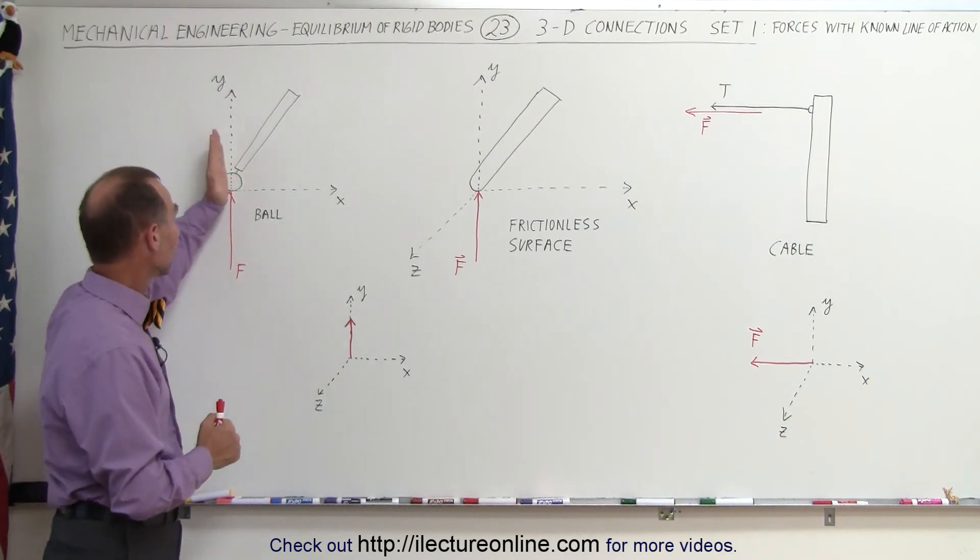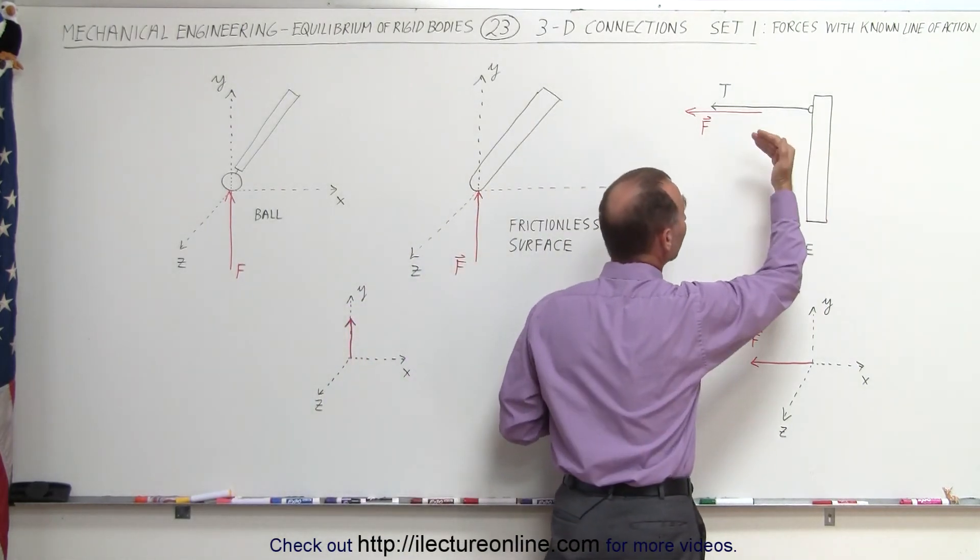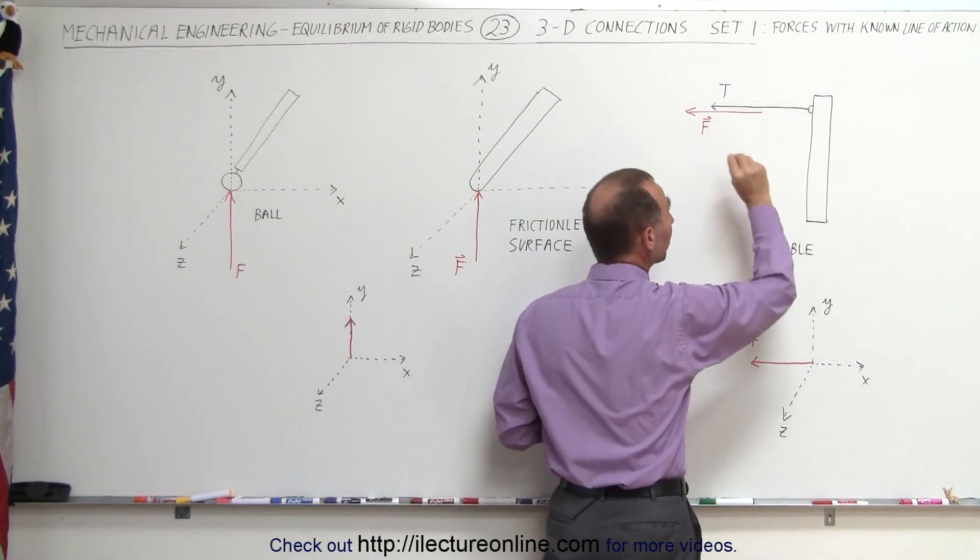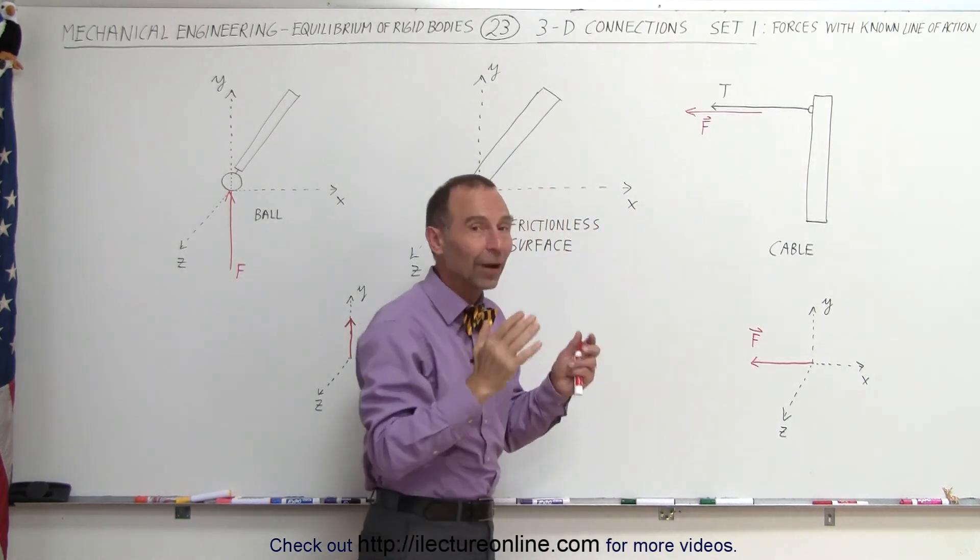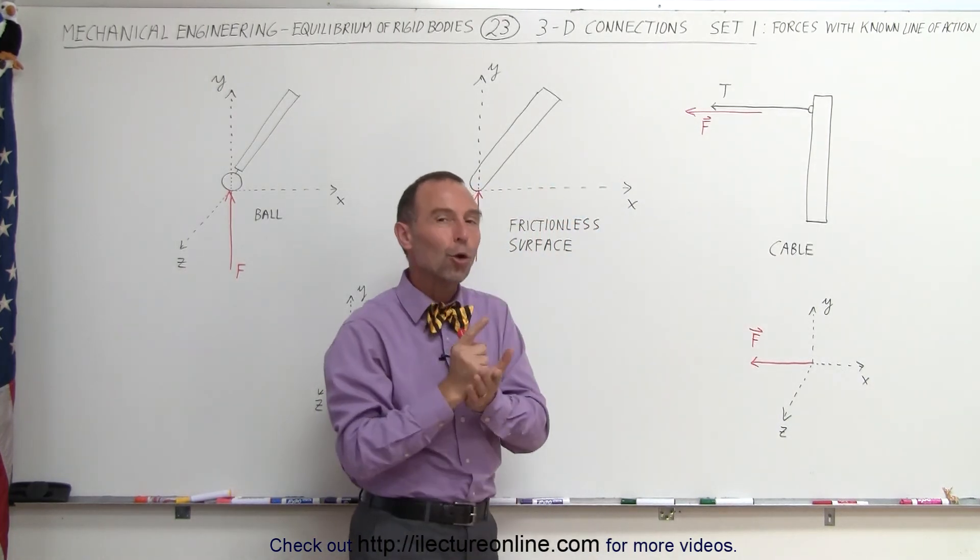So here it's directly upward from the floor, and here in this case it's directly away from the post. Now it's possible that this cable could be in various directions, but again it's only a singular direction and therefore a single known line of action.